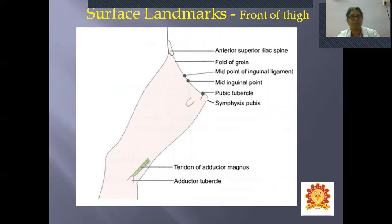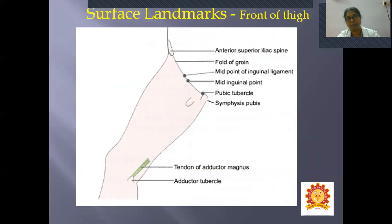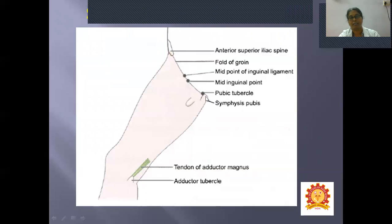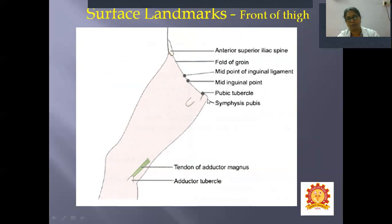Surface landmarks on the front of the thigh: the anterior superior iliac spine, pubic tubercle, and pubic symphysis define the inguinal region — also called the groin — which gives attachment to the inguinal ligament. The midpoint of the inguinal ligament lies between the ASIS and the pubic tubercle, while the mid-inguinal point lies between the ASIS and the pubic symphysis — the midpoint of the inguinal ligament is lateral and the mid-inguinal point is medial. Near the medial condyle is the adductor tubercle, to which the tendon of adductor magnus is attached.